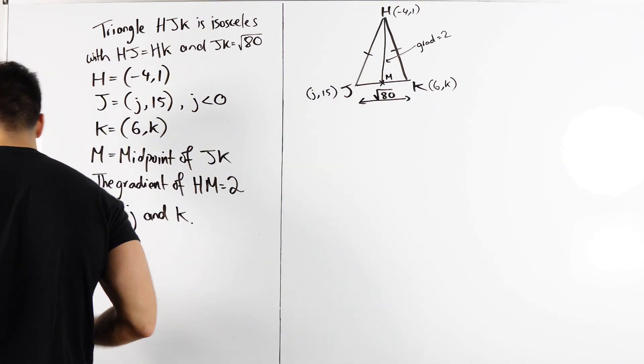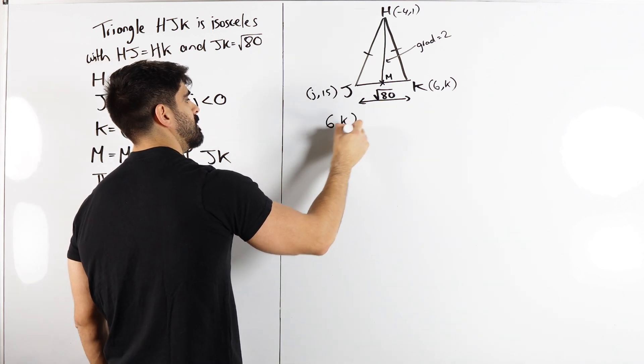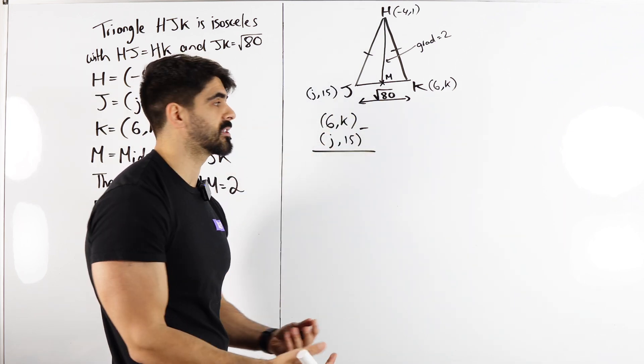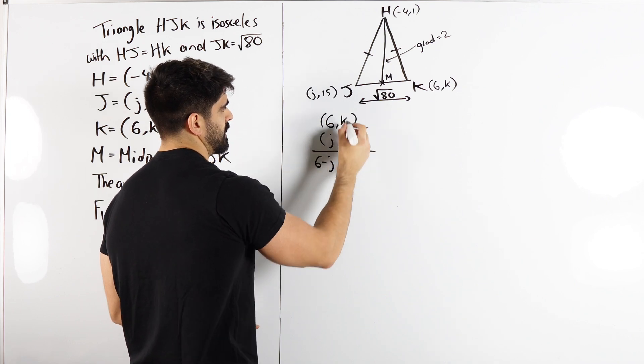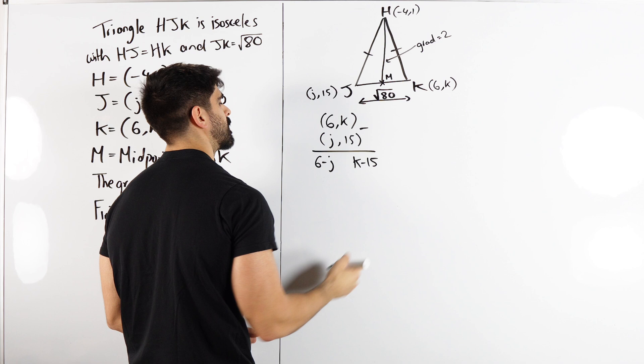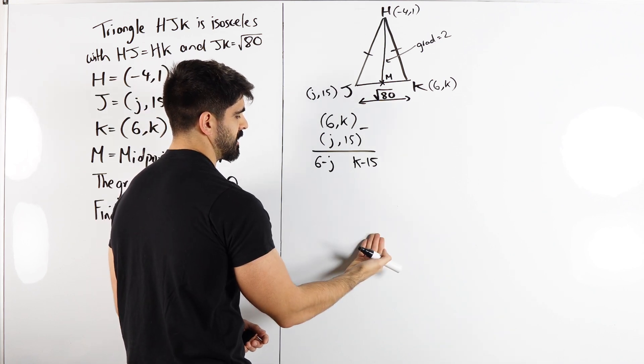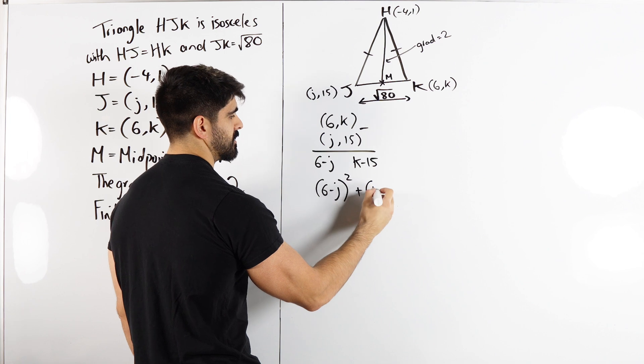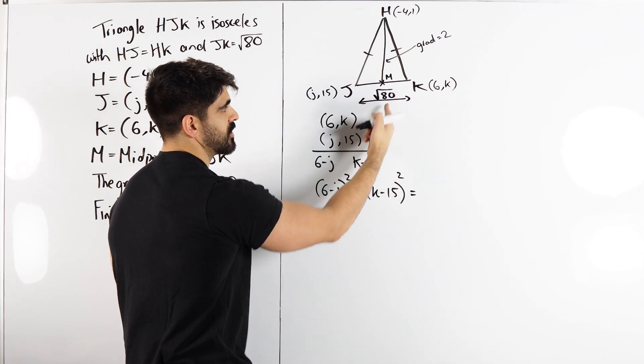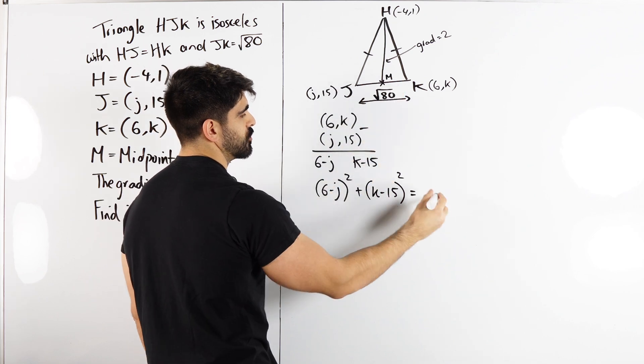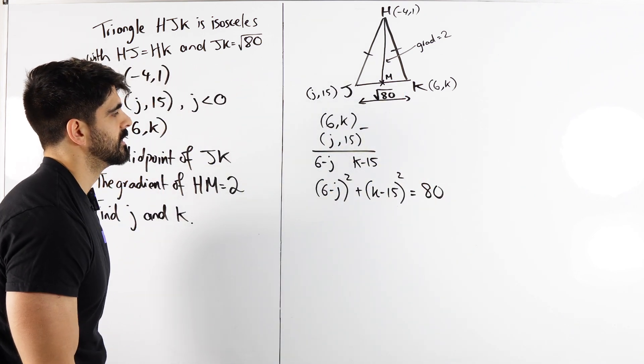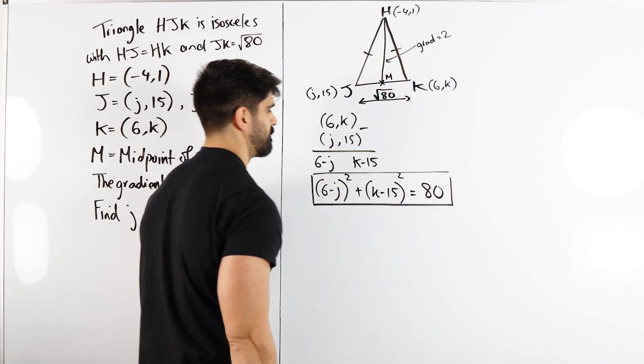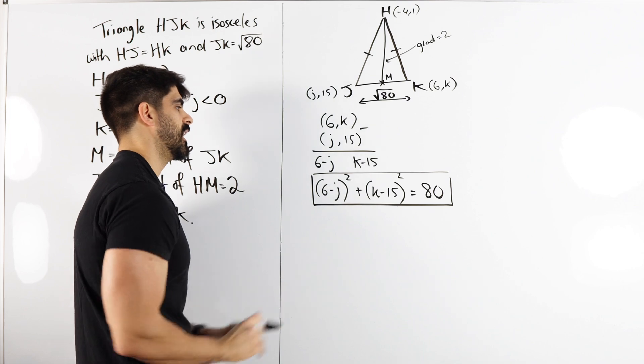I'm going to take these two coordinates and subtract them. So I take (6, K) and (J, 15), subtract them and write it in columns so that if there's any double negatives we don't make silly mistakes. We get 6 minus J and K minus 15. That's my change in X and change in Y. So (6-J)² and (K-15)² doing Pythagoras equals 80. I'm not going to expand that for now because then you're going to get 2Js and Ks squared. I like it like this.